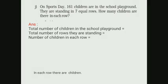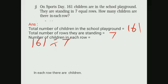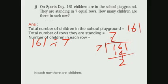Total number of children in the school playground: 161. And total number of rows they are standing: 7. Number of children in each row - we are going to find out. How to find out? You all know that it is 161 divided by 7. Then we are going for the sum. 161 divided by 7: 7 twos are 14, remaining will be 2. And 1 is there. 7 threes are 21, and remaining will be 0.